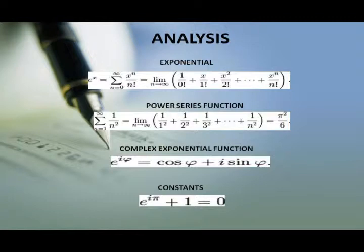Power series expansion: Euler discovered the power series expansion for e and the inverse tangent functions. That means Σ (n=1 to ∞) 1/n² = lim(n→∞) (1/1² + 1/2² + 1/3² + ... + 1/n²) = π²/6. He also defined the exponential function of complex numbers and discovered its relation to the trigonometric functions. Euler's formula states that e^(iπ) = cos(π) + i·sin(π), or more generally e^(iθ) = cos(θ) + i·sin(θ).